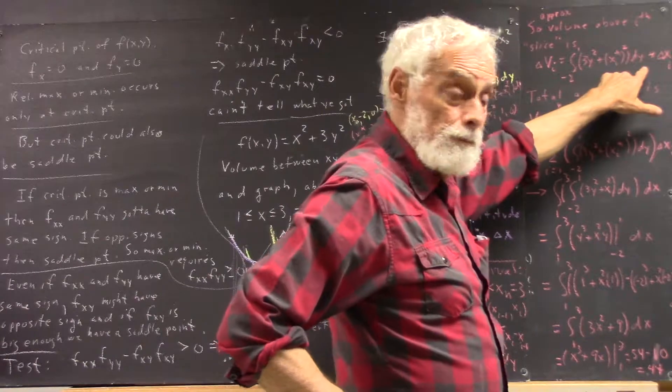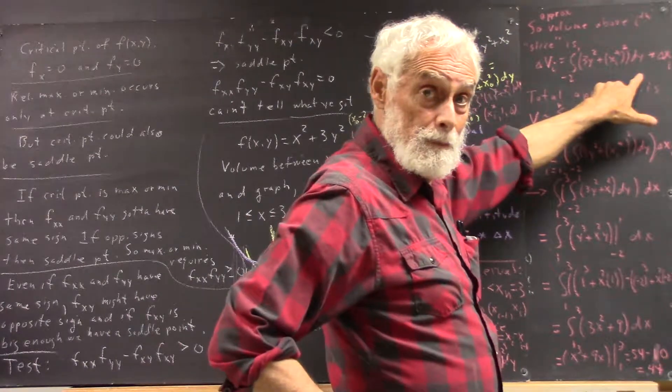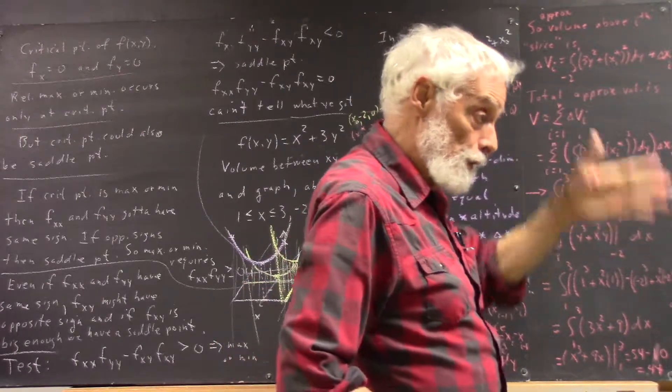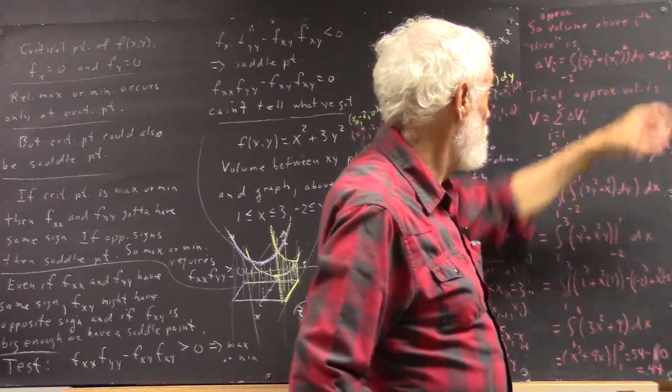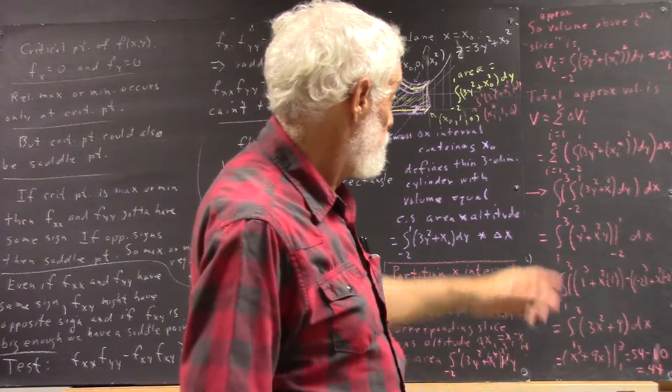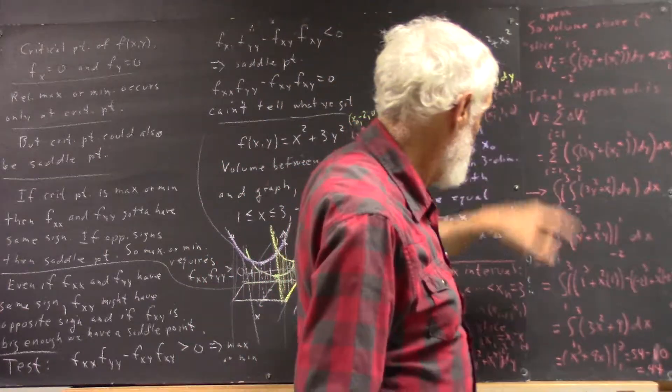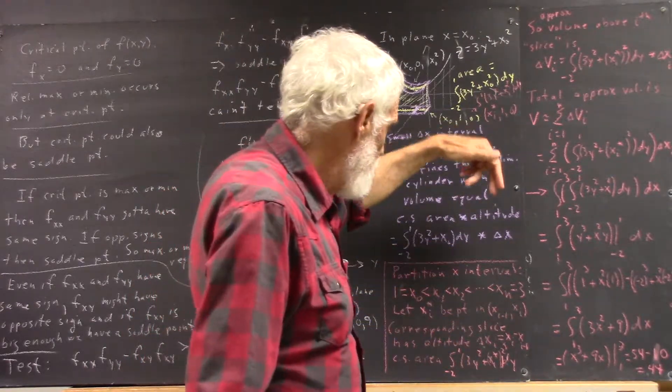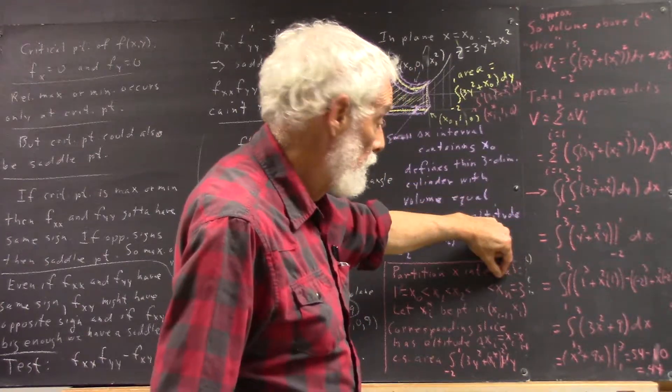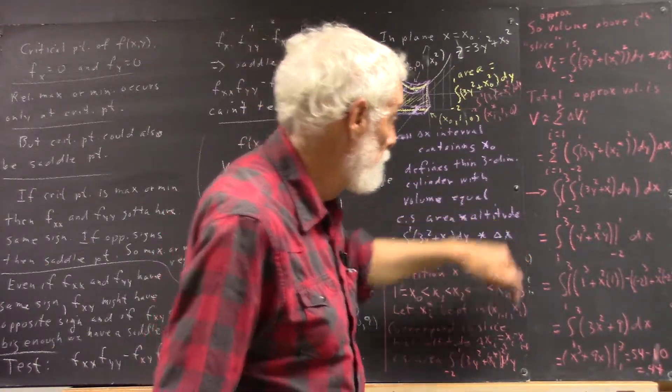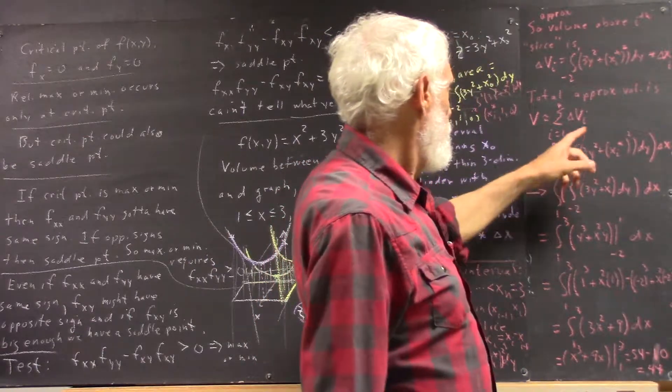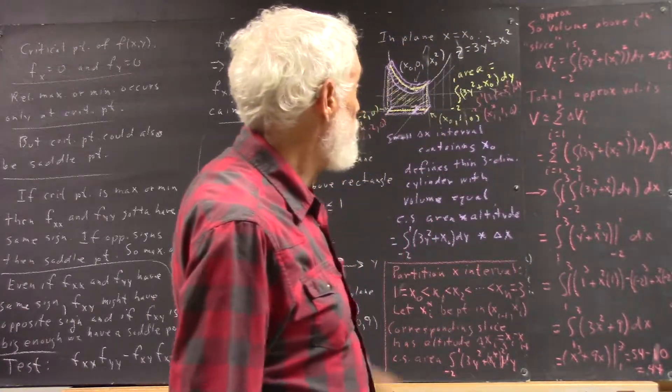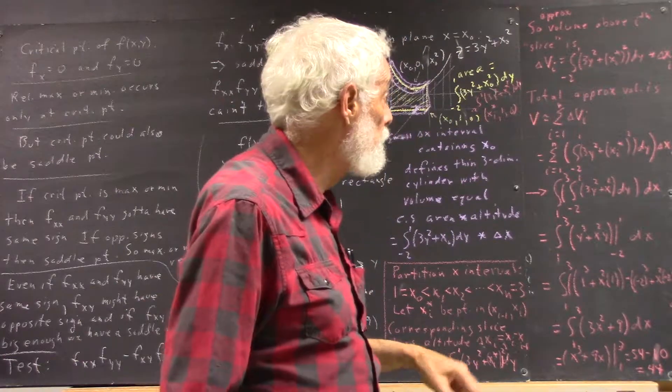That's going to be this integral, which we should be familiar with by now, or become familiar with, for the cross-sectional area, multiplied by the delta x sub i. So the total approximate volume is sum from i equals 1 to n. Remember there, n, we have n sub-intervals in our partition, and of course our partition goes from x equals 1 to x equals 3. So we have sum from i equals 1 to n of delta v sub i, where delta v sub i is this, which is the same as this.